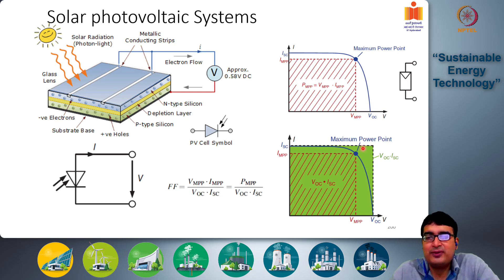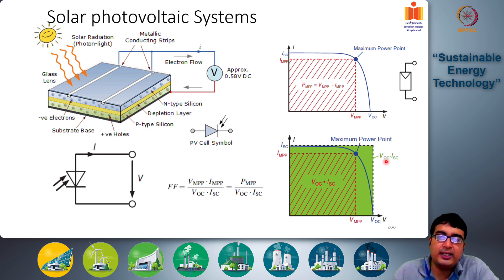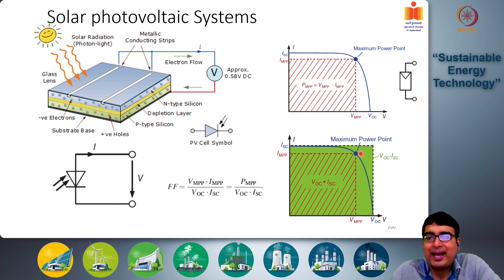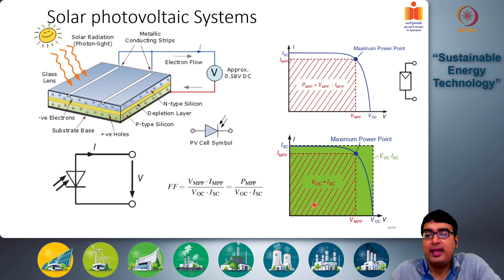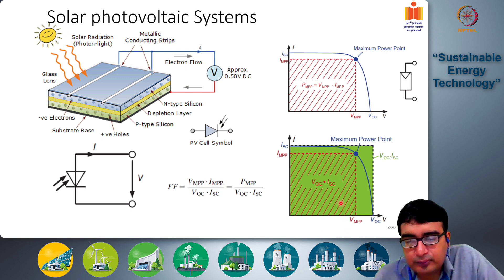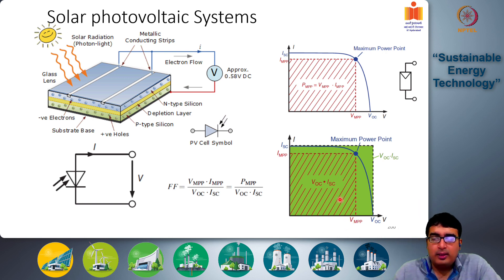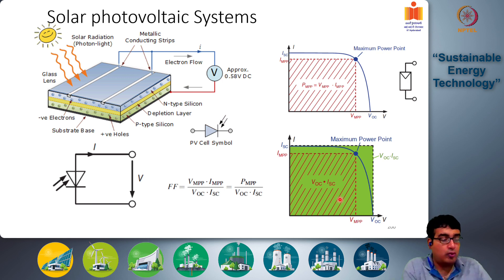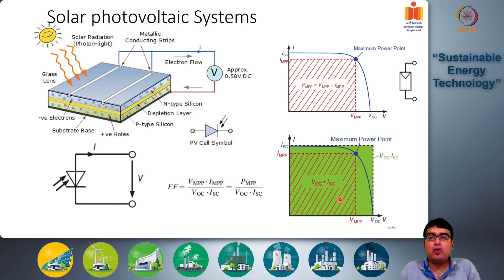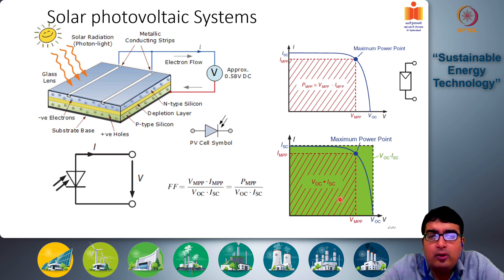The fill factor idealizes the solar cell power-voltage curve as a rectangle — an idealized constant current source — and compares the area of this rectangle, which is the idealized power given by open circuit voltage times short circuit current, to the actual maximum power given by the area under the real curve. The fill factor is around 0.8 for good quality solar cells and can go down to 0.4 to 0.7 for medium quality solar cells.